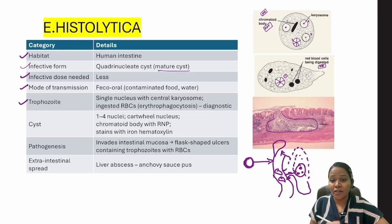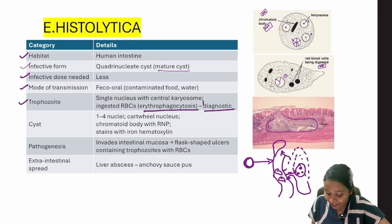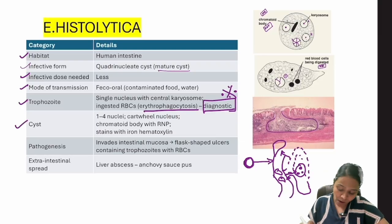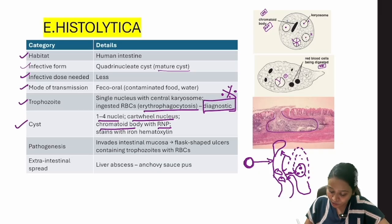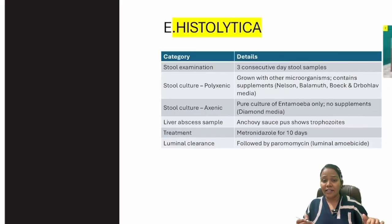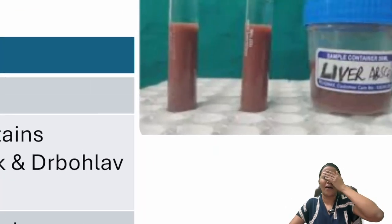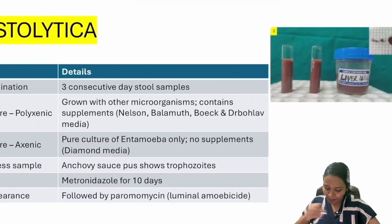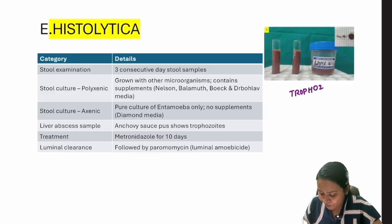The infective form is the quadrinucleate (mature) cyst, and the infective dose is very low. Mode of transmission is feco-oral. Trophozoites have a single nucleus, central karyosome, and ingested RBCs — erythrophagocytosis — which is the diagnostic hallmark. The cyst has one to four nuclei with a cartwheel appearance and a chromatoid body with RNP, stained with iron hematoxylin. Pathogenesis involves intestinal mucosal invasion forming flower-shaped ulcers, with extraintestinal spread to the liver forming anchovy sauce pus containing trophozoites.